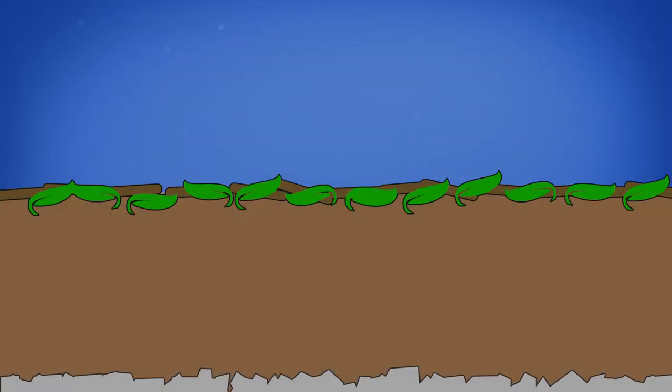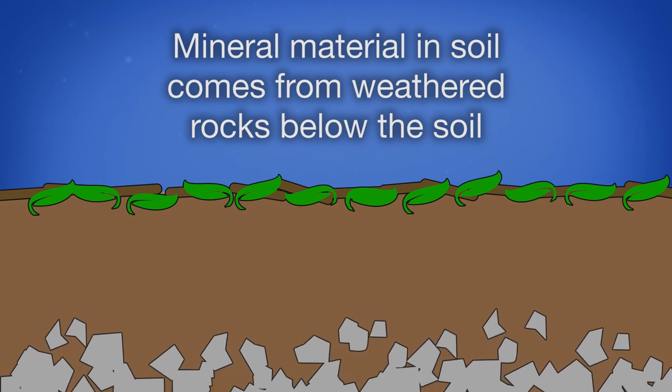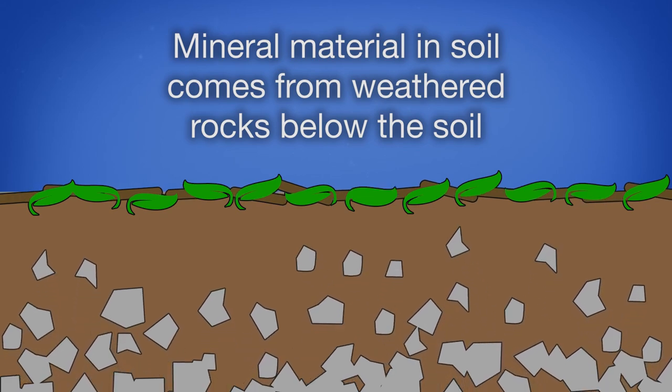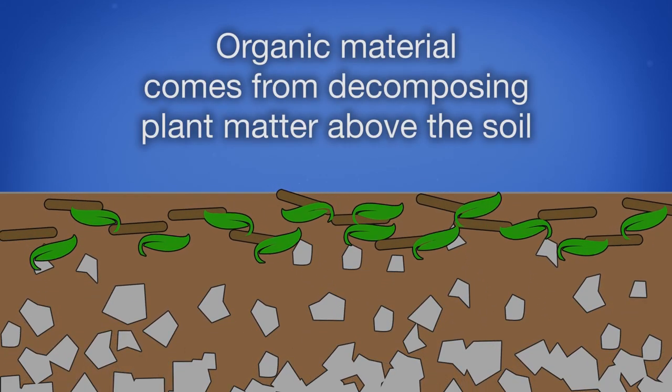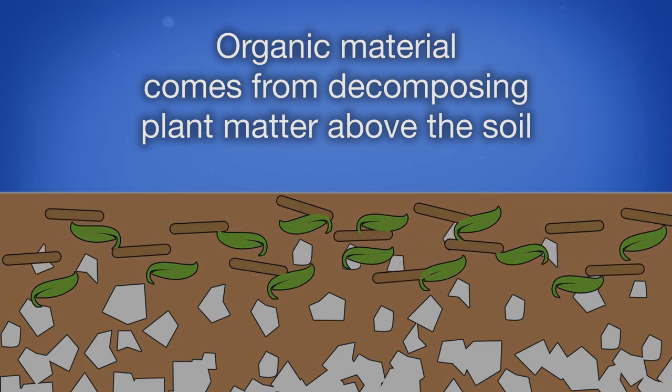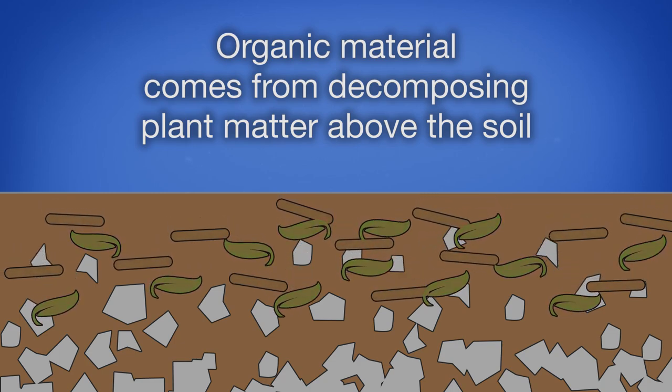It takes hundreds to thousands of years for soils to form. Soil is a dynamic mixture of both mineral and organic material. The mineral materials come from the weathering of rocks below the soil, or glacial till. Organic material comes from decomposing leaves, sticks, and branches falling from above. A poorly developed soil, which we often call a young soil, tends to have less organic material than a more developed or mature soil.